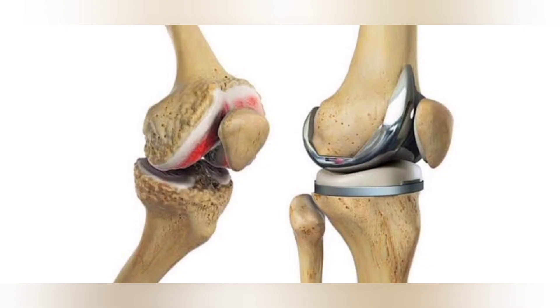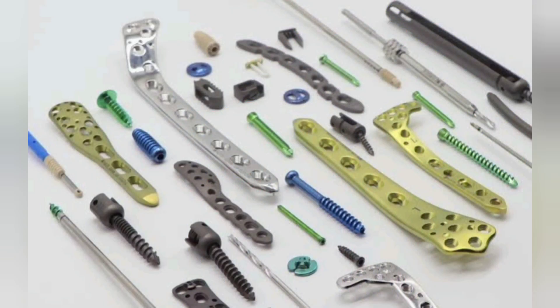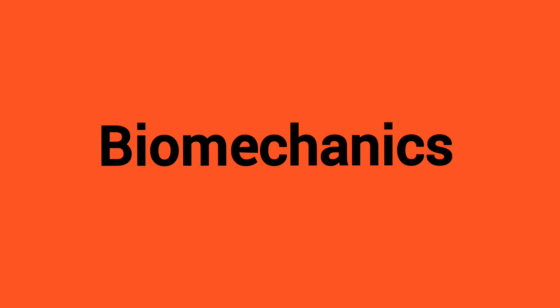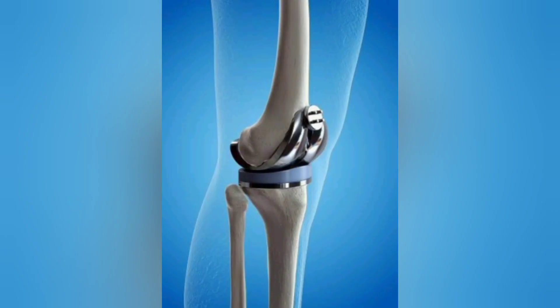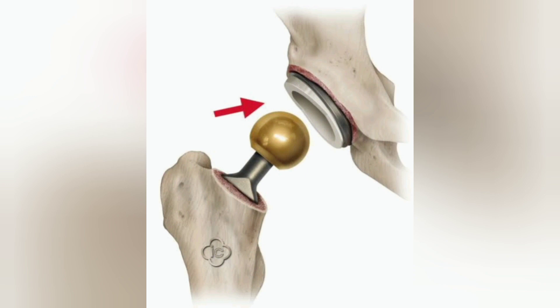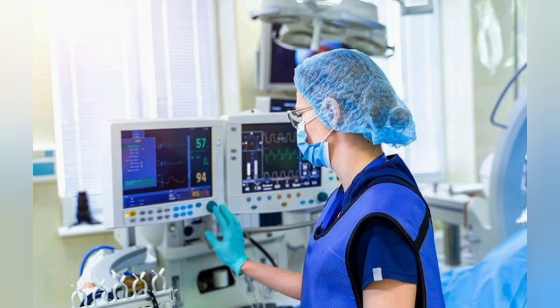Biomaterials engineering is used in the design of knee replacement joints and hip replacement joints used in orthopedic surgery. Biomechanics is used in applications like robotic arms, knee replacement joints, and hip replacement joints, and has a very large stake in these areas.